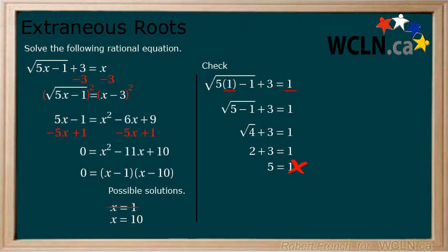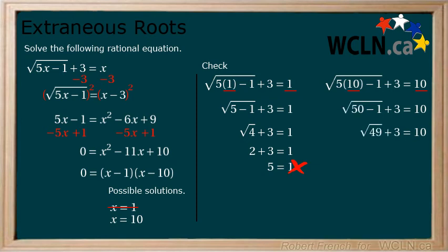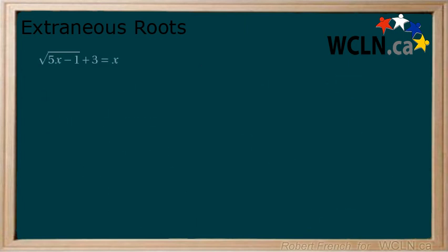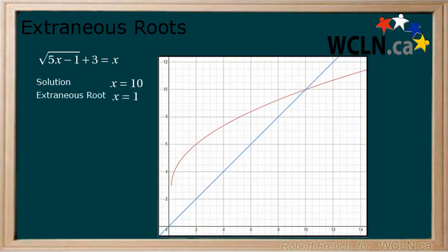Now check x equals 10. Replace x equals 10 back into the original equation. 5 multiplied by 10 equals 50. Subtract 1 to get 49. The square root of 49 is 7. 7 plus 3 equals 10. 10 equals 10 is a true statement. Therefore, x equals 10 is a solution. We determined that x equals 10 is a solution to the equation and x equals 1 is an extraneous root. When we look at the graph of the functions x and the square root of 5x minus 1 plus 3, we see that there is a solution at x equals 10 but not at x equals 1, which matches our algebraic work.